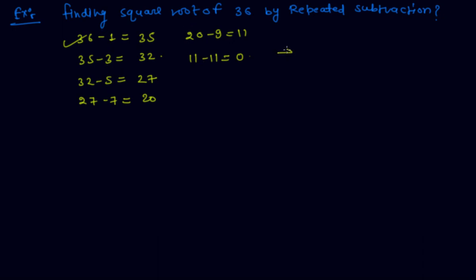Therefore, the square root of 36 is 6. So this is the required answer. I hope you understand the repeated subtraction method to finding square root of any number. Please download the Scholar Learning app and if you already downloaded, enjoy learning. Thanks for watching this video.